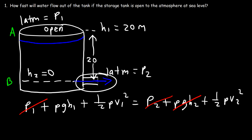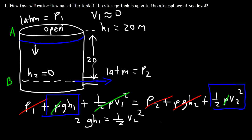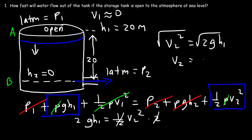As the fluid shoots out, the water level descends very, very slowly, so we can say that v1 is approximately 0 and get rid of that term. What we have left is ρgh1 equals 1/2 ρv2². We cancel the density, giving gh1 equals 1/2 v2². Multiplying both sides by 2, v2² equals 2gh1, and taking the square root gives the same result: the efflux speed is the square root of 2gh1.